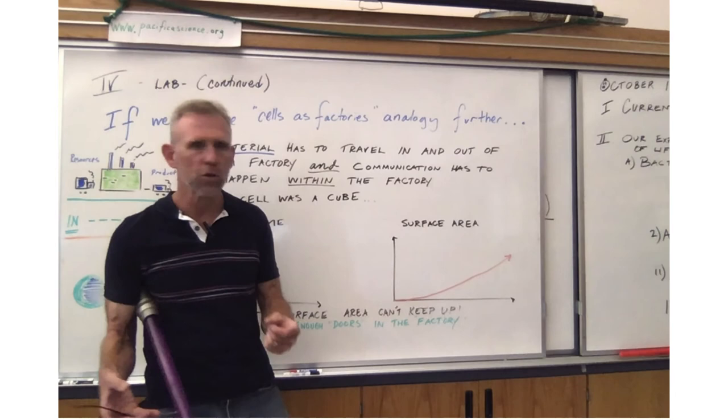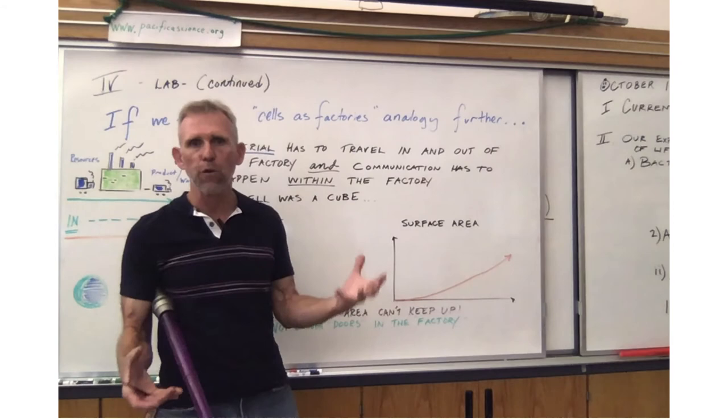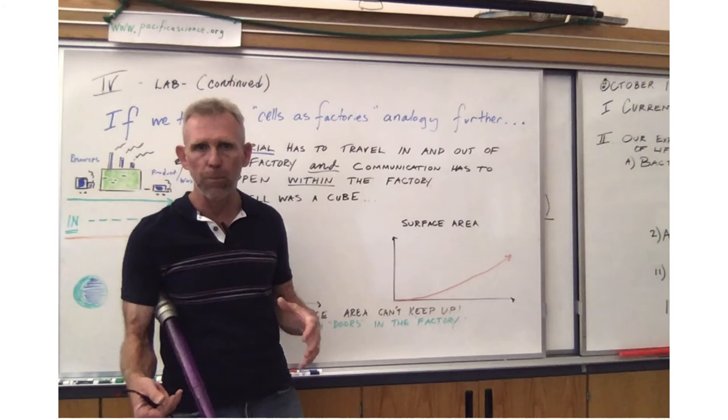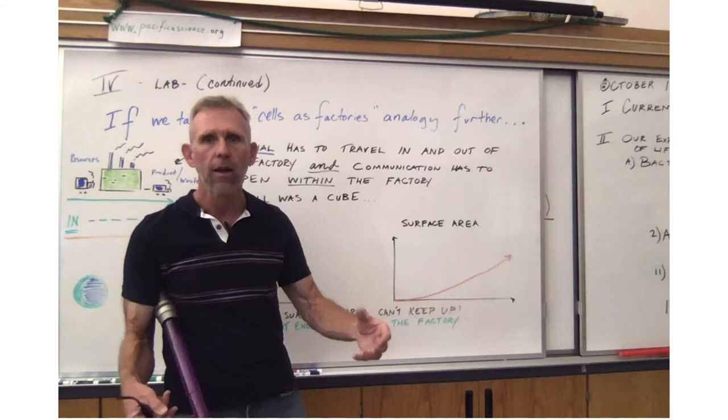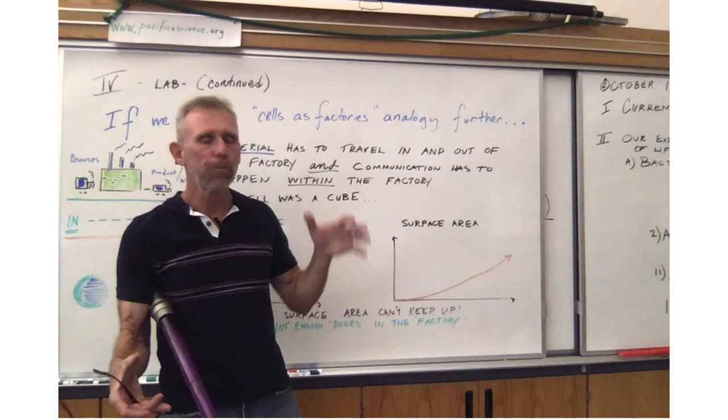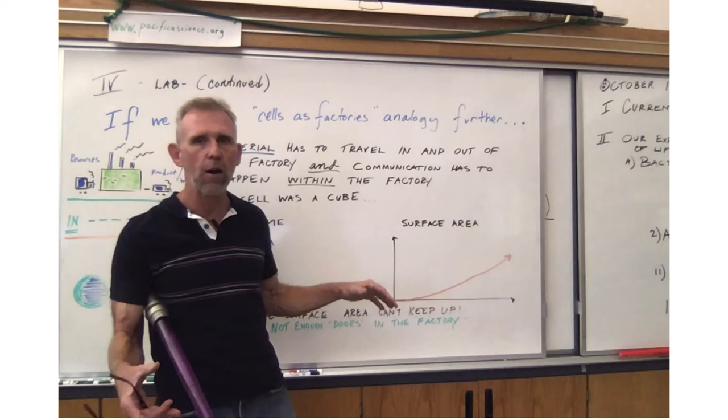The reason is there's a math limit on the size of your cell. Well, the volume starts going up so much that the surface area, the doors to the factory, if you will, can't keep up. You can't get material in and out of the cell fast enough to keep up with the growth. You can't get the communication from the DNA, the main office, if you will, of the factory. You can't get the communication out to the rest of the cell fast enough because the volume, the amount of space inside, starts to go up too quickly. So a very good example, a good crossover with our math classes, and a good example of how math puts a limit on things.